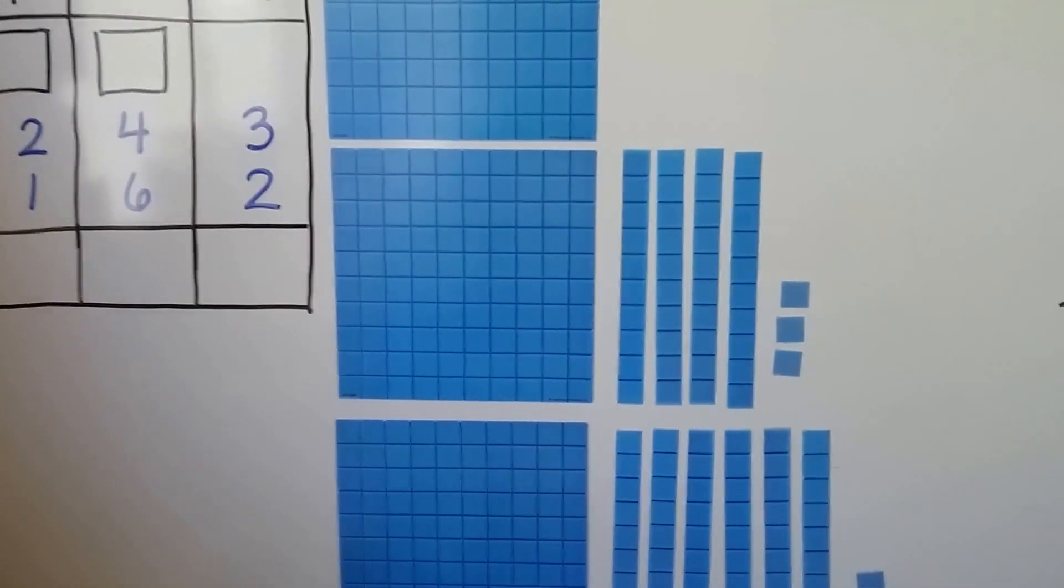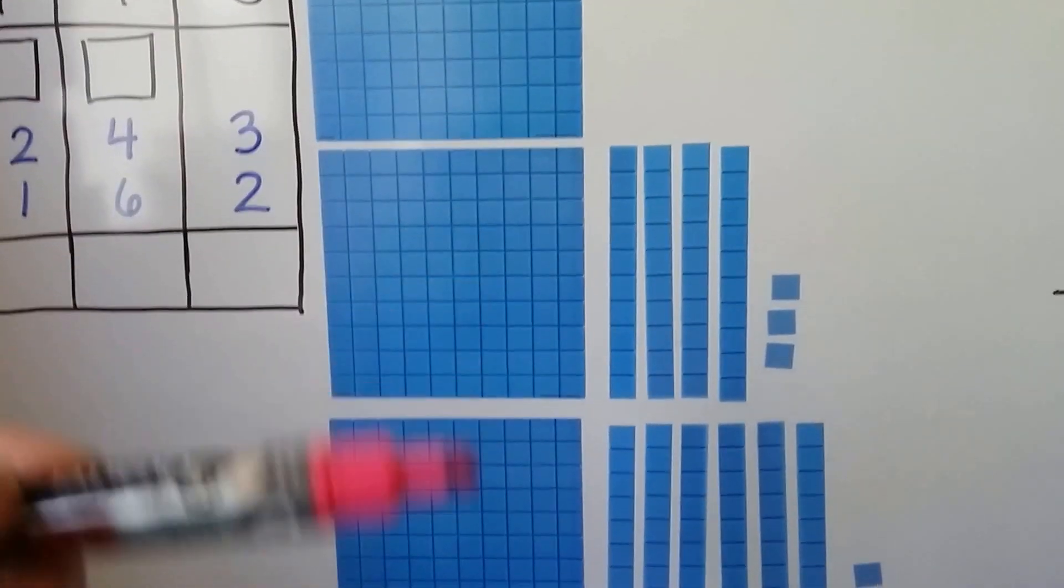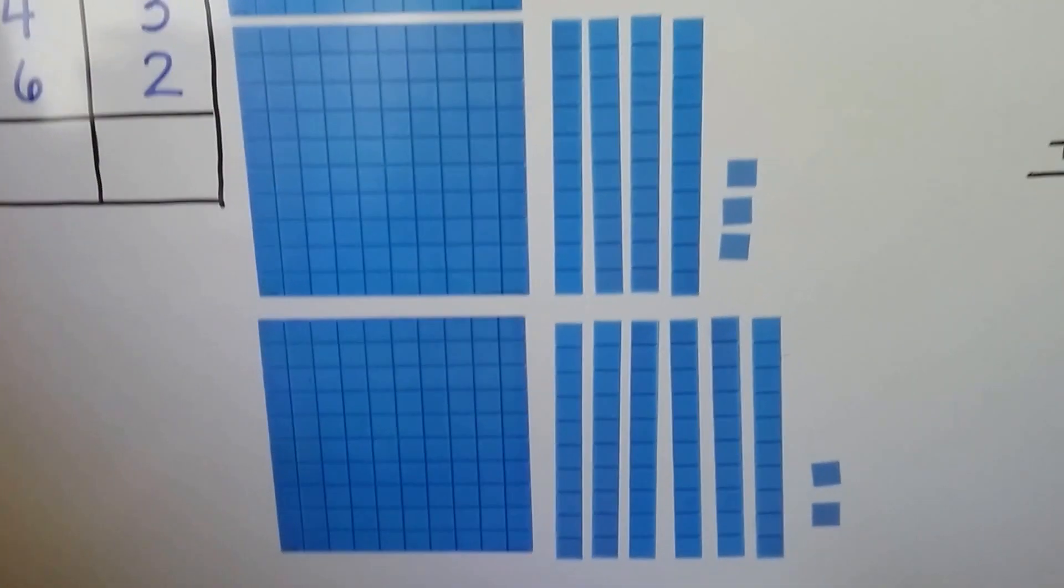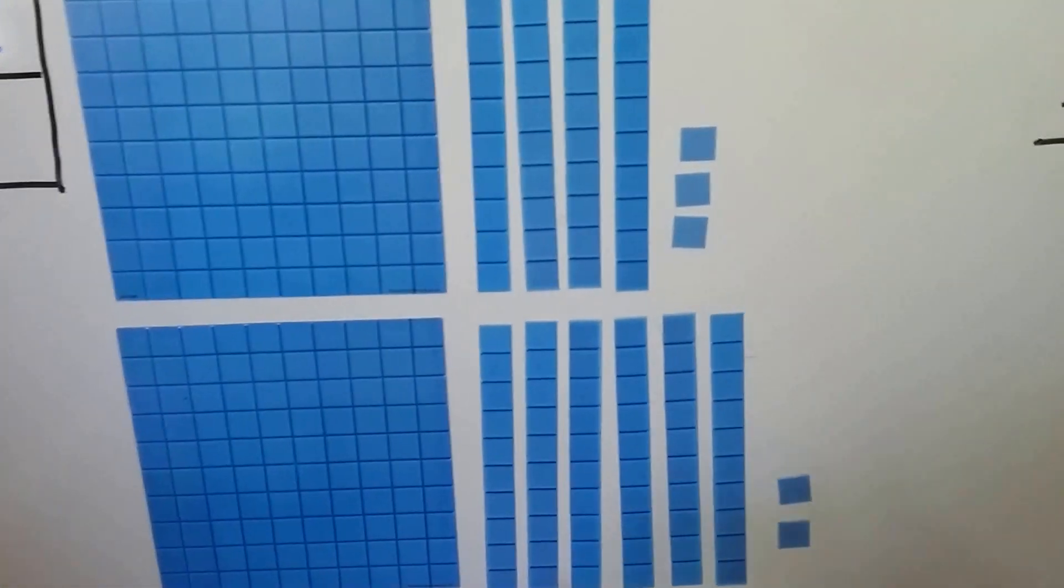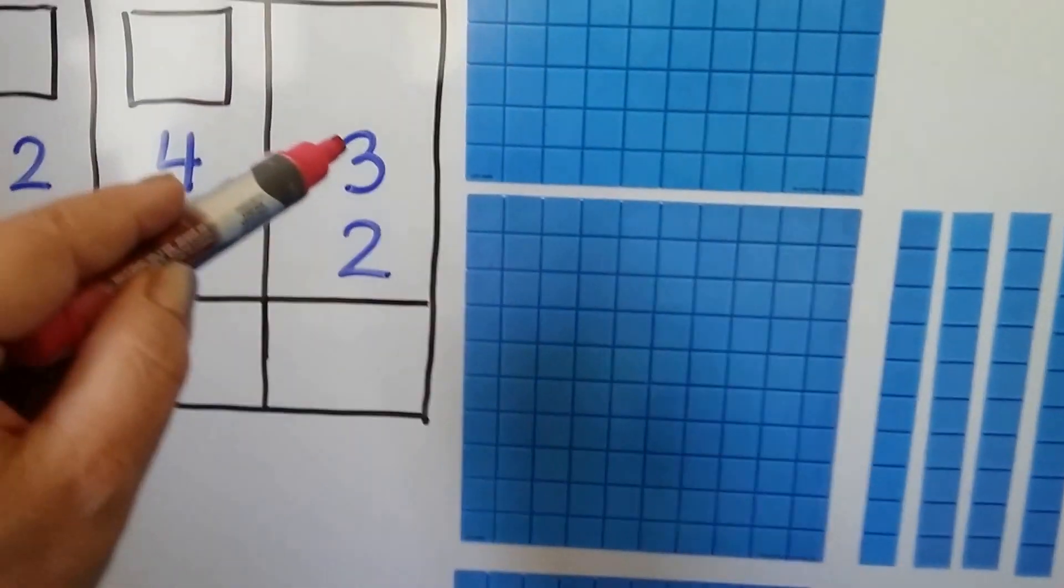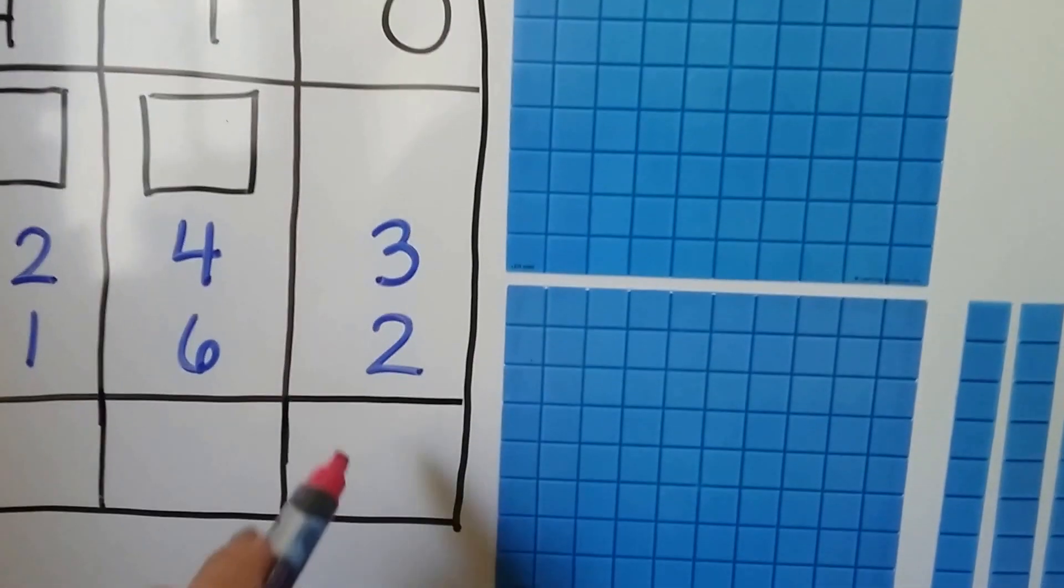We're going to just put these all together. So we know we have 300 here. Let's start with the ones. How many ones do we have? There's one, two, three, four, five. So we know we have five ones. Three plus two is five.